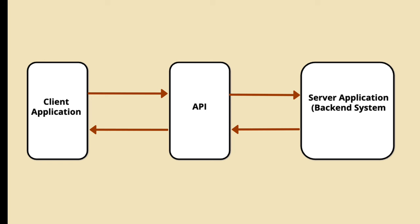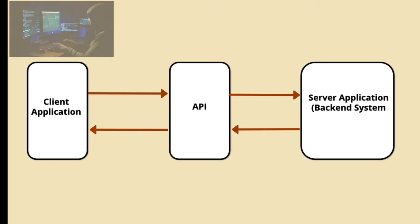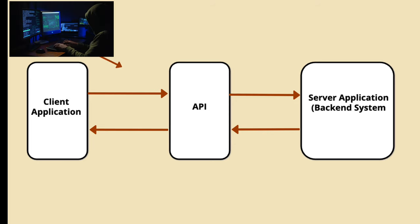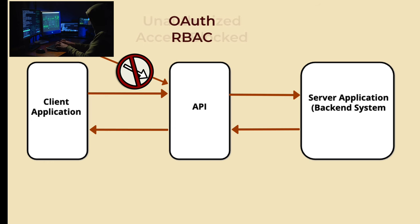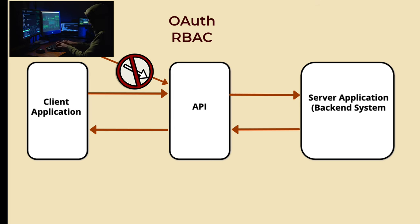To safeguard APIs against various attacks, it's essential to implement a multi-layered security strategy. For unauthorized access, employing strong authentication and authorization mechanisms is crucial. For instance, using OAuth 2.0 can ensure that only authenticated users can access the API, and role-based access control, RBAC, can restrict access to sensitive endpoints based on user roles.